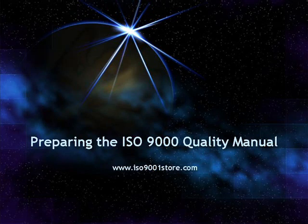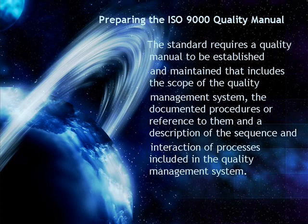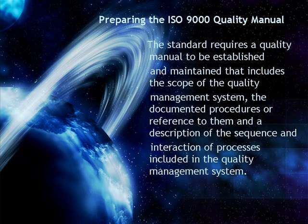Preparing the ISO 9000 Quality Manual. The ISO 9000 standard requires a quality manual to be established and maintained that includes the scope of the quality management system, the documented procedures or reference to them, and a description of the sequence and interactions of processes included in the quality management system.